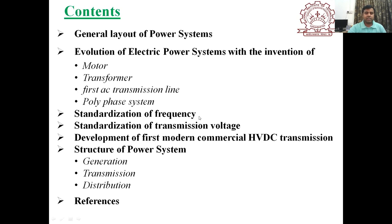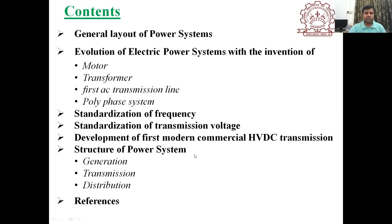We will also see the standardization of transmission voltage — why transmission voltage levels are like 11 kV, 33 kV, 66 kV, 132 kV, and so on. Then we will see the development of the first modern commercial HVDC transmission system, and the structure of the power system: generation, transmission, and distribution.